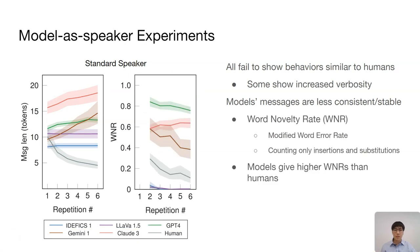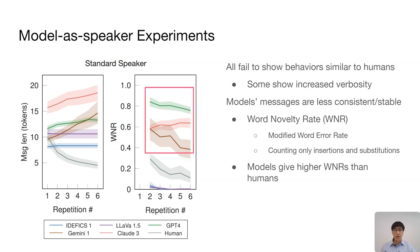We propose a metric called word novelty rate to measure this issue. It's a modified word error rate which only counts insertions and substitutions, not deletions, because word deletions naturally happen in humans' convention formation and have less impact on the listener's perception. We measure the word novelty rate between corresponding messages from consecutive repetitions, showing how consistent these messages are. In human-human interactions, word novelty rate decreases and becomes very low. The model speakers, however, have much higher word novelty rates. IDFix and LLaVA are the only exceptions — they mainly repeat their initial messages throughout the interaction. This is undesirable too, because their messages do not shorten.